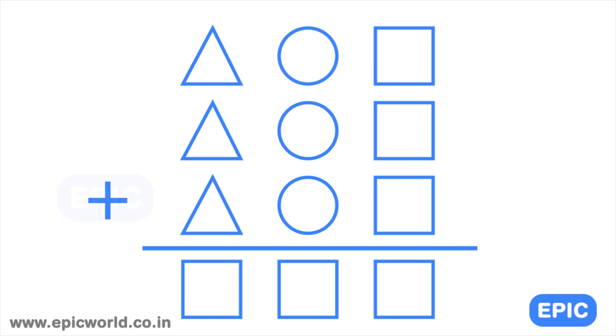Here, in this math equation, each of the shapes represent a different digit between 0 and 9. So, the triangle, the square and the circle each represent a different digit.